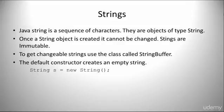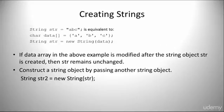The default constructor creates an empty string. For example: String s = new String(). If the data array is modified after the string object str is created, then str remains unchanged. We can also construct a string object by passing another string object — for example: String str2 = new String(str).